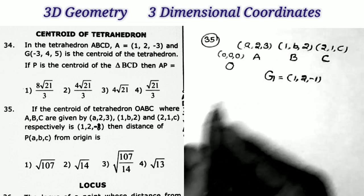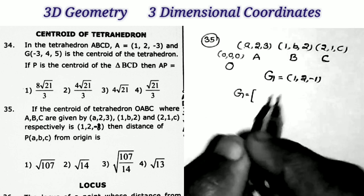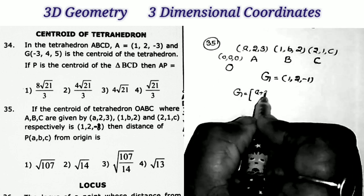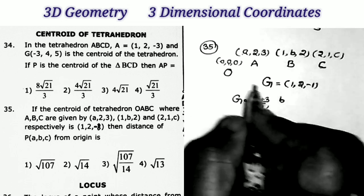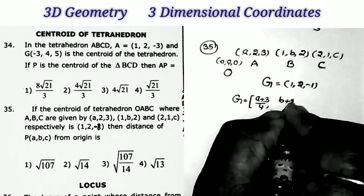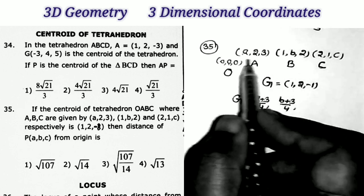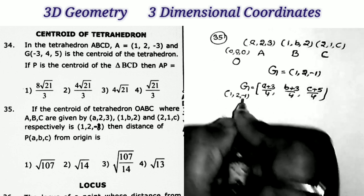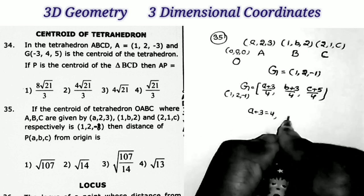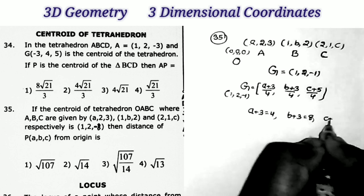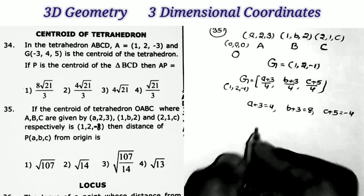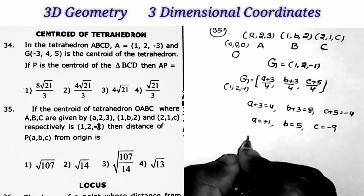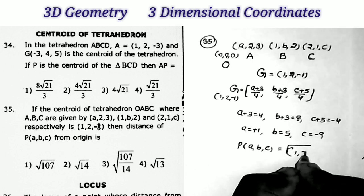Using the centroid formula for the tetrahedron: G_x = (0 + a + 1 + 2)/4 = (a+3)/4 = 1, so a+3 = 4, a = 1. G_y = (0 + 2 + b + 1)/4 = (b+3)/4 = 2, so b+3 = 8, b = 5. G_z = (0 + 3 + 2 + c)/4 = (c+5)/4 = -1, so c+5 = -4, c = -9. Therefore P = (a, b, c) = (1, 5, -9).